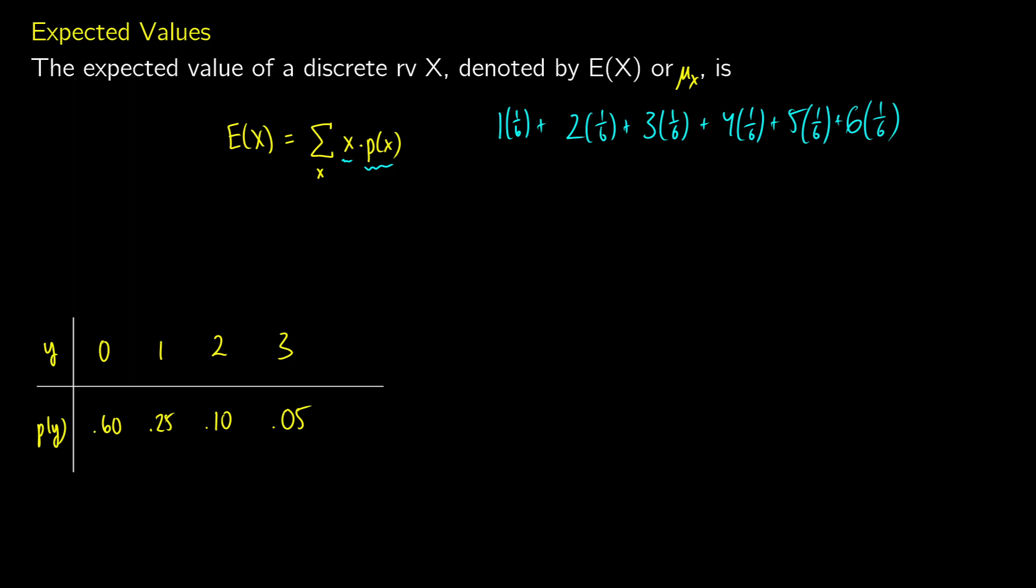So this gives us one times one sixth plus two times one sixth plus three times one sixth, and then we can simplify and find a value. So you would get one sixth plus two sixths plus all the way up to plus six sixths, which is going to give us 21 over 6. We could simplify this by dividing by three to get seven over two, and we know that this is going to be 3.5.